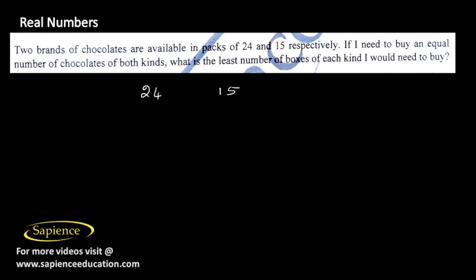So for this question we need a certain number of boxes that can be divided by 24 as well as 15. That is, the certain number can accommodate 24 chocolate boxes as well as 15 chocolate ones. So we need to find the LCM of 24 and 15 first.